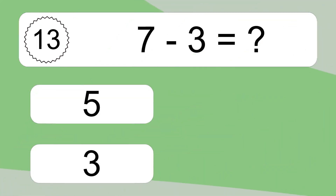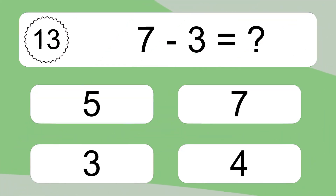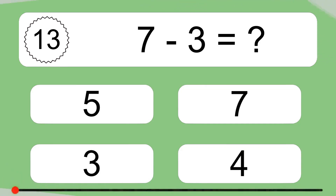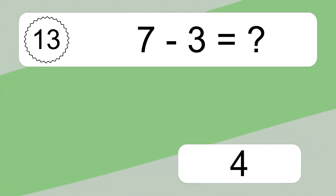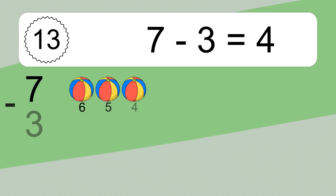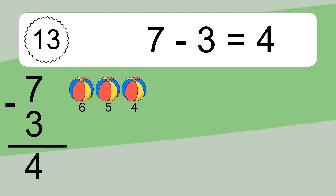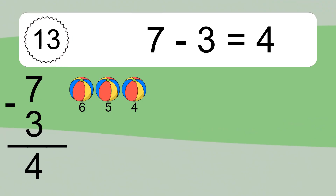5 minus 3 equals what? 17 minus 3 equals 4. Let's count it. 6, 5, 4.